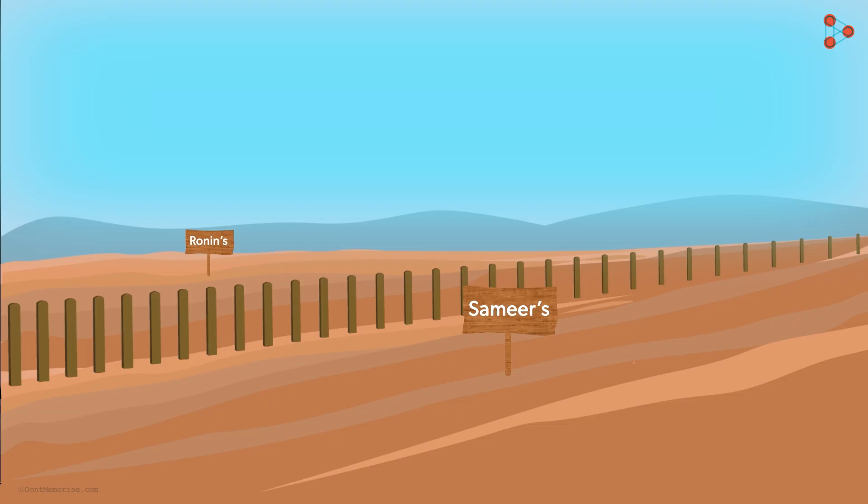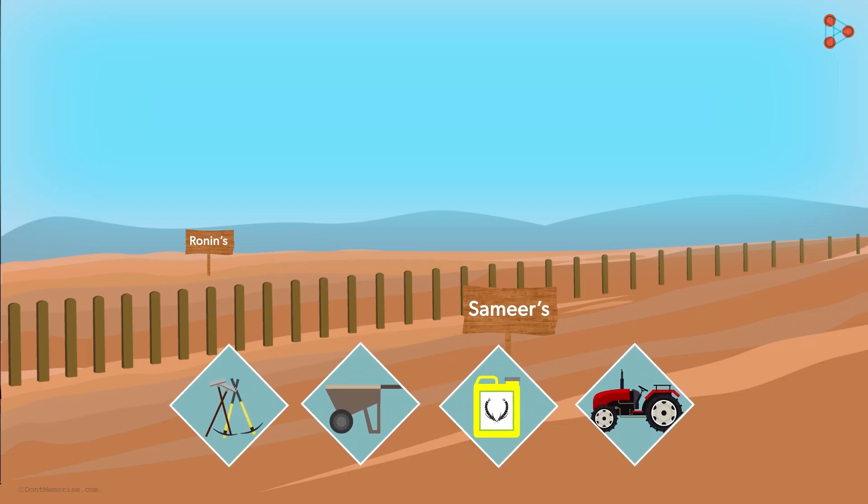The former one invests in a tractor, fertilizers and many other types of equipment. The latter has land but cannot afford to buy any of these equipments. What would be the resulting yield?